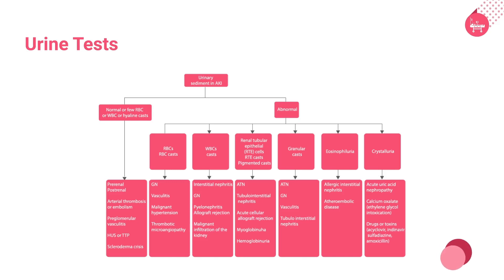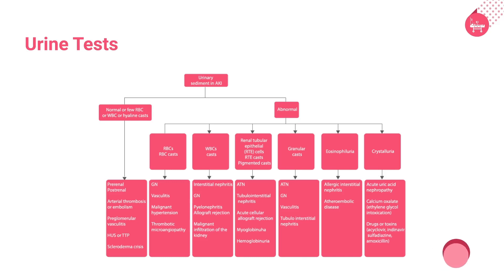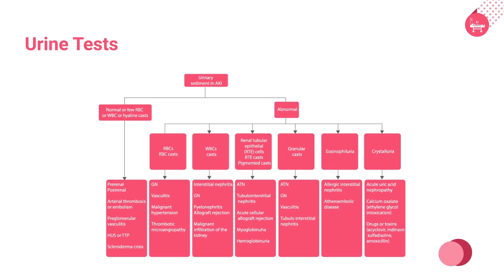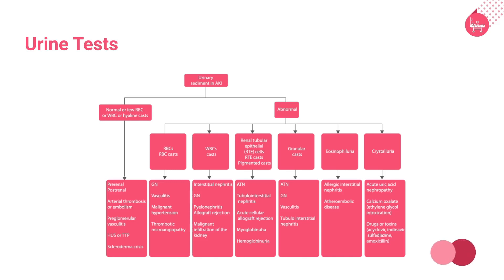Bence-Jones protein tests should be done. The presence of RBC casts distinguishes the hematuria associated with glomerulonephritis from that of post-renal or urologic causes. Crystalluria occurs in obstruction due to renal calculi or medications. The fractional excretion of sodium indicates the degree of renal sodium avidity, which generally reflects renal perfusion. A value of less than 1% indicates pre-renal azotemia.